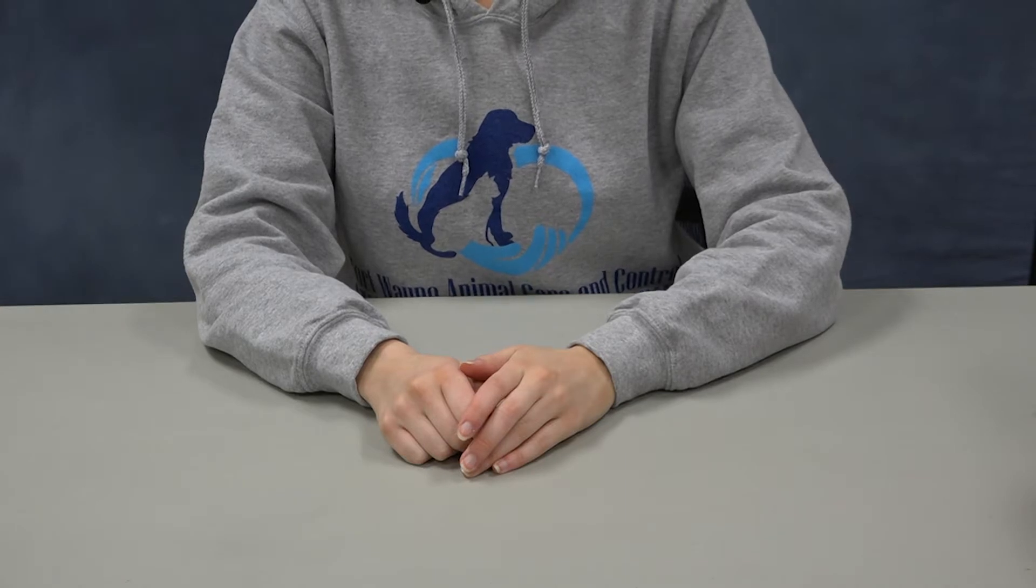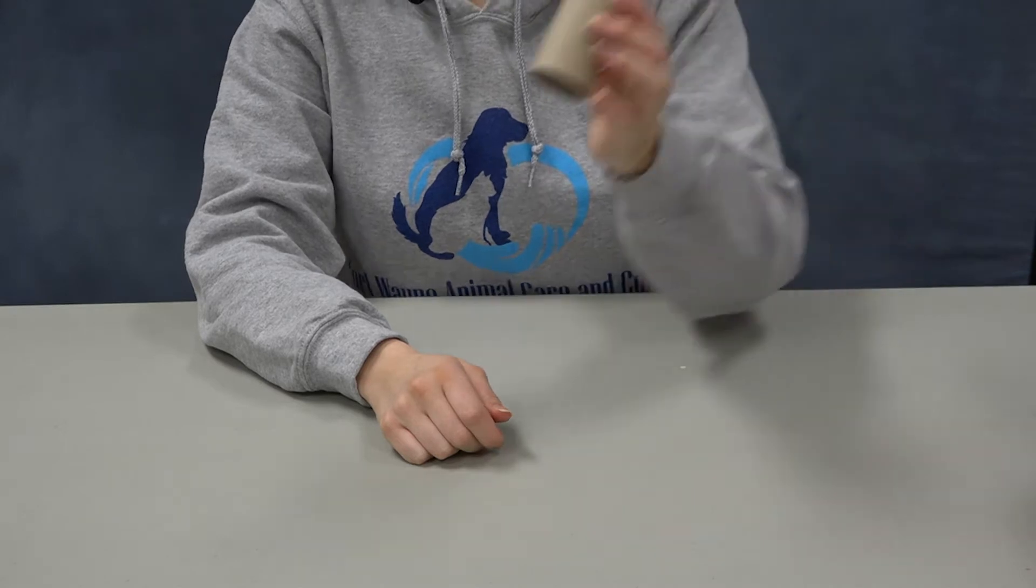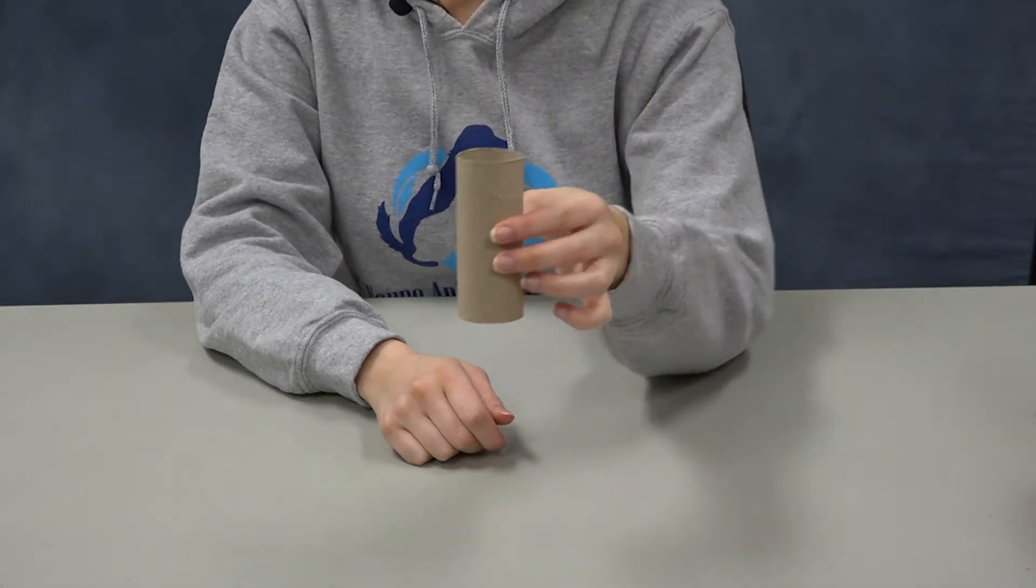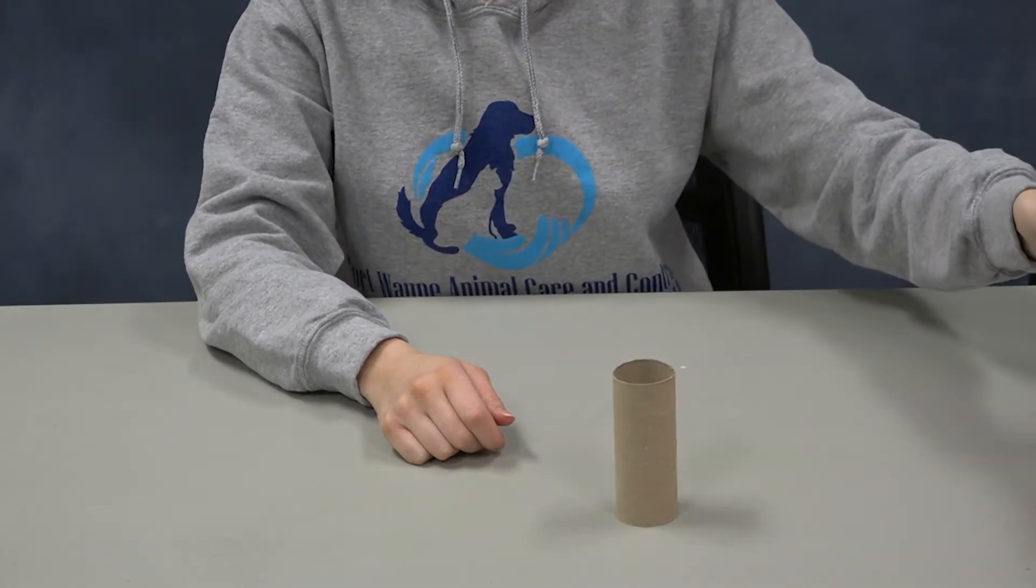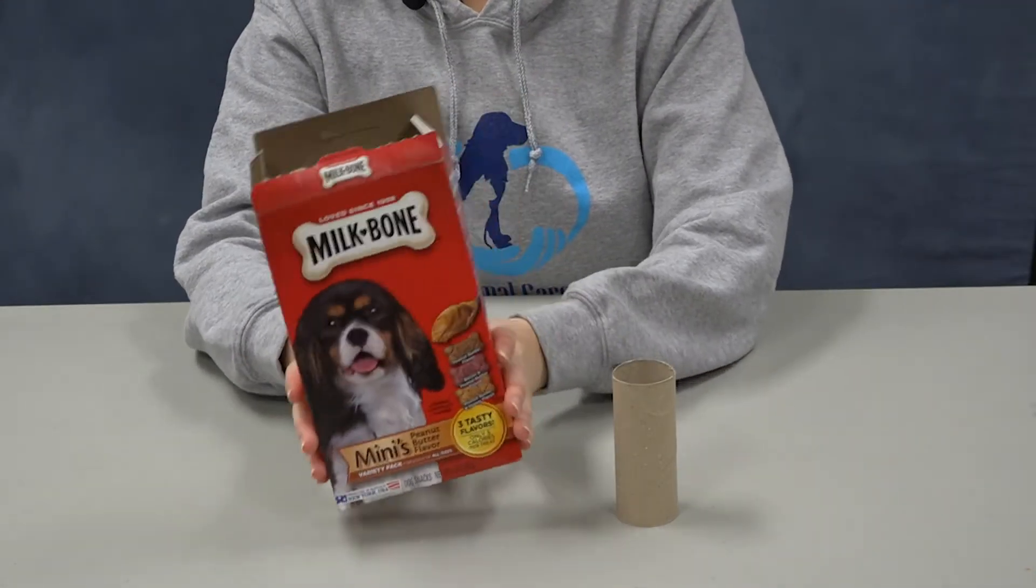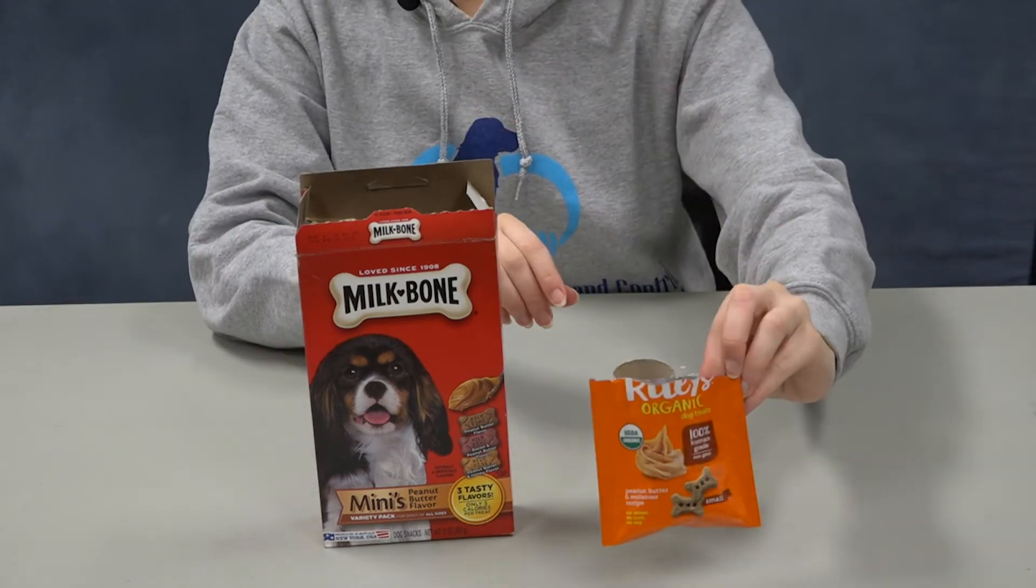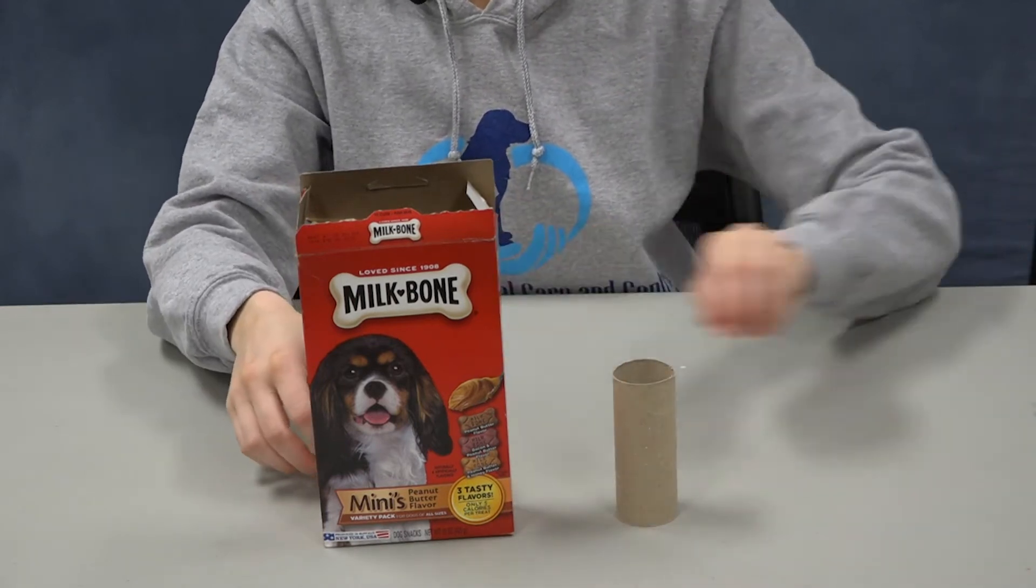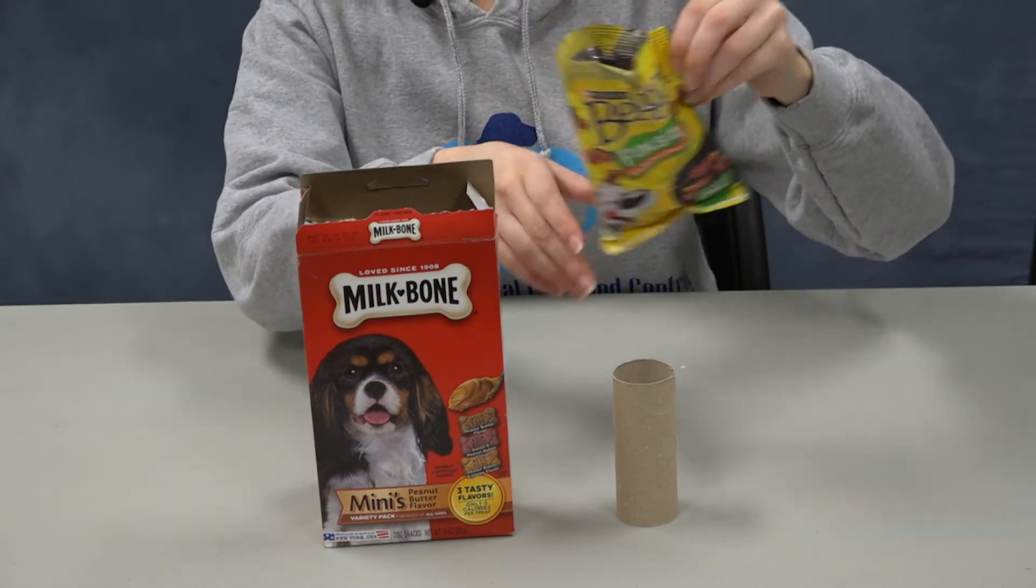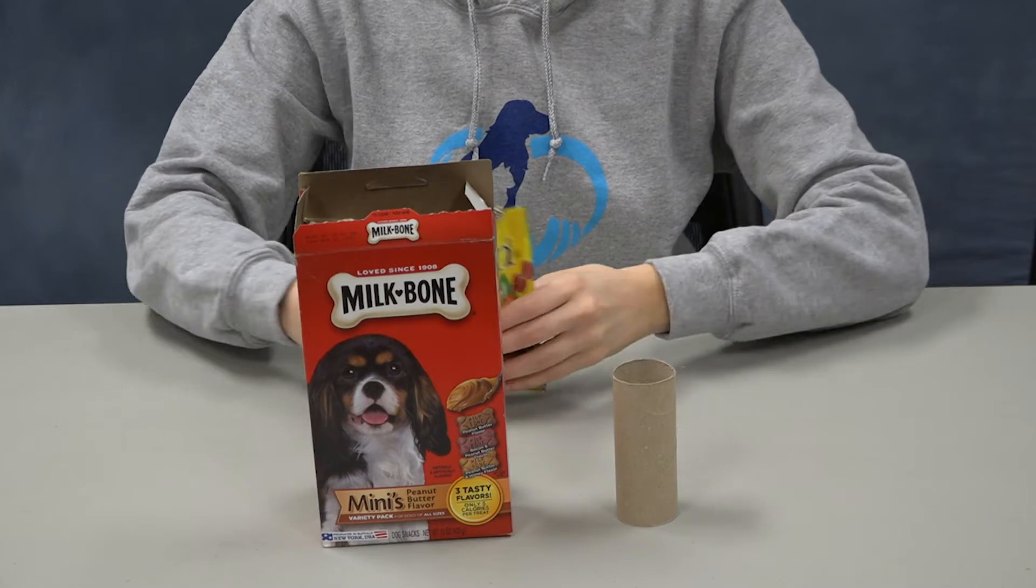To make your dog's enrichments, you're only going to need two things. One is a toilet paper roll, and two is your dog's favorite treats. So we have some mini milk bones, some peanut butter biscuits, and some mini bacon strips. But make sure to choose whatever your dog loves most.